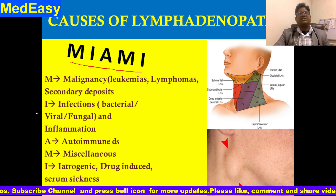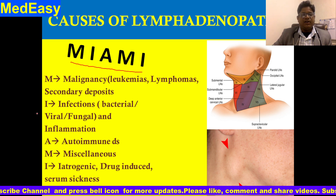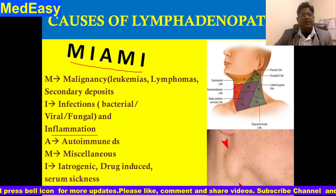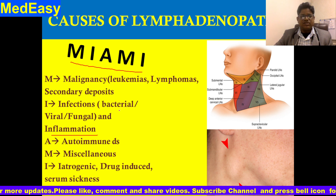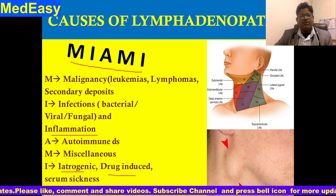I is for infection — bacterial, viral, or fungal — and also inflammation. A is for autoimmune diseases, various autoimmune conditions that cause lymphadenopathy. The second M is for miscellaneous causes, and the final I is for iatrogenic causes: drug-induced or serum sickness.